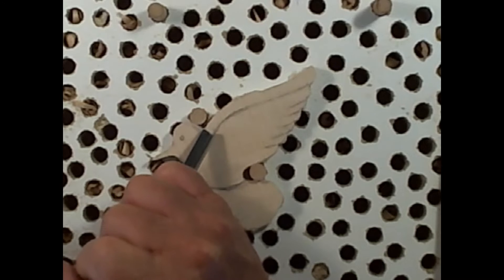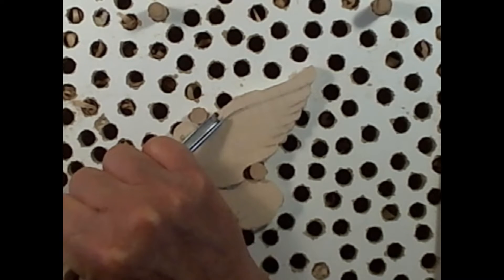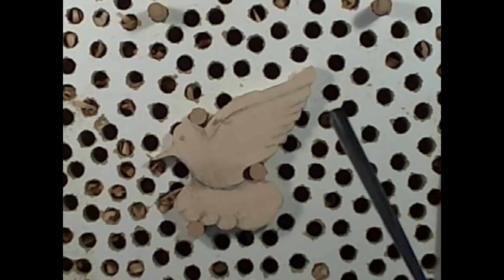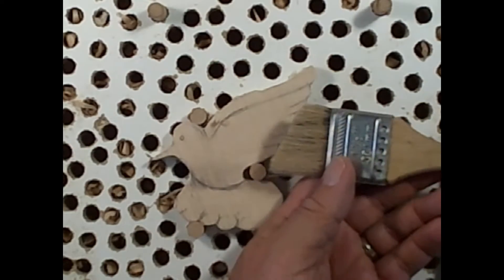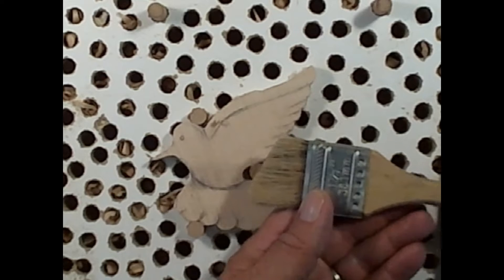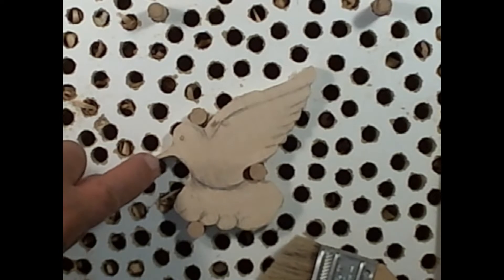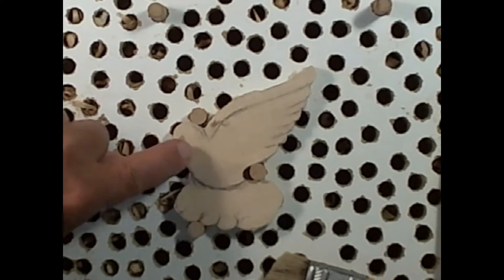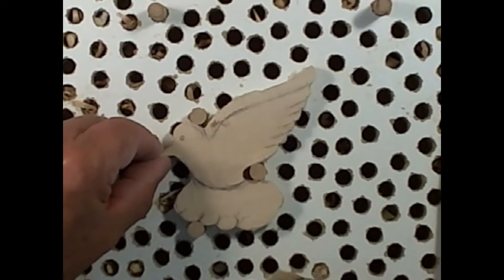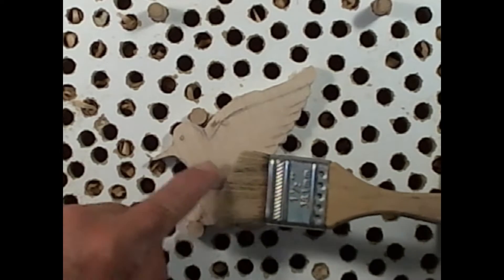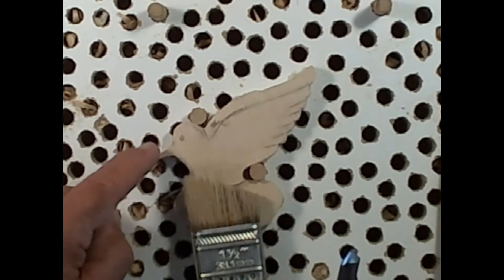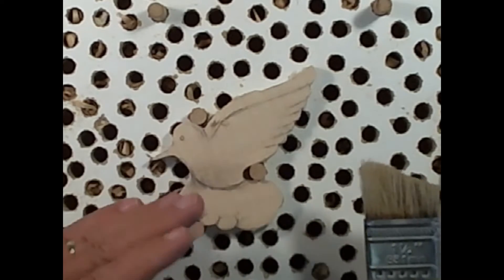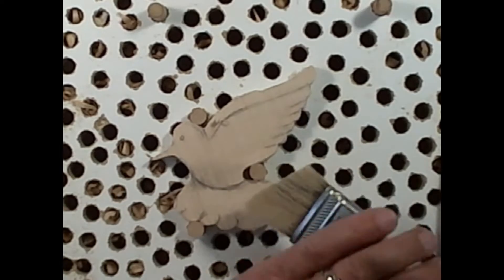I'm going to take the V tool and make the stop cuts. So to go in the right direction is coming down this way. Here's the grain is going this way. And I orientated the grain because this is the weakest part. The weakest part is the beak of this here dove. And I want the grain to run the long way. If I had the grain running the short way, that beak would break off. So that's why I orientated the grain like this.